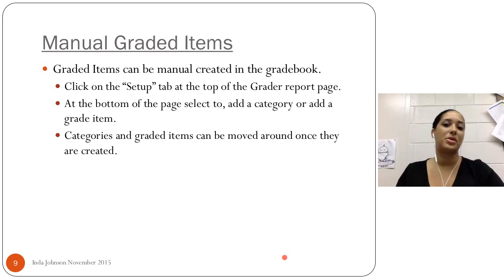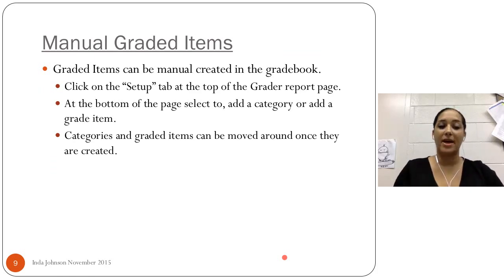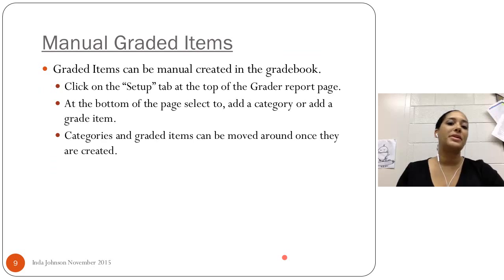The manually graded items — this is what I want to touch on a little bit more, because this is something I use quite differently than a lot of people do. On your grader report view there's a setup tab — it used to be called categories and items, but it's called setup now. At the bottom you have the option of adding categories and/or grade items. The difference is a category is the parent, and anything you put in there will calculate into the category total. A grade item is an individual graded item, like a journal assignment or a writing assignment.